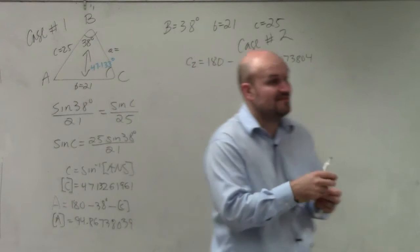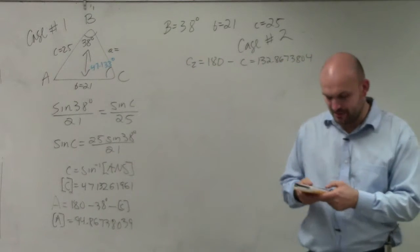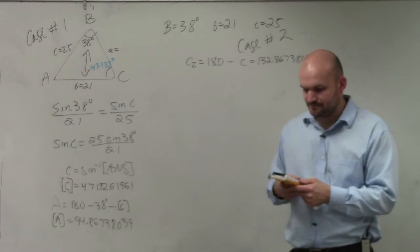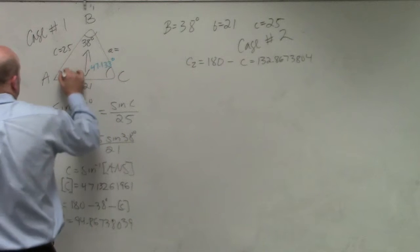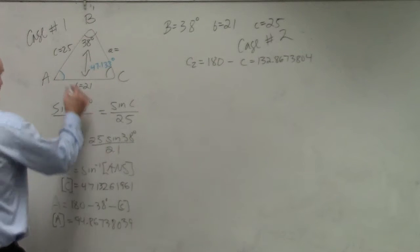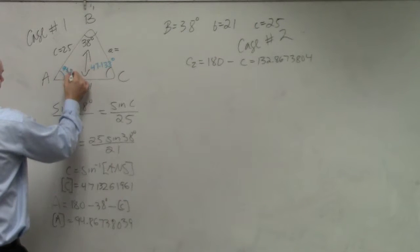They'll be off by a 1,000th or 100th of a decimal or value. So I'm just going to do 180 minus 38 minus alpha c. And I get a is equal to 94.86738039. Now again, I'm going to want to use that value again. So I'm going to store that as a. So I'm going to hit store alpha a. Now that's stored. But when I write my answer up here, I'm going to round it to 94.867.